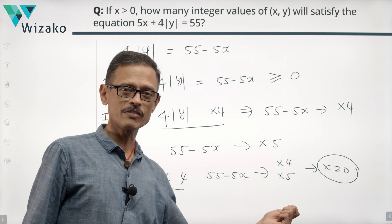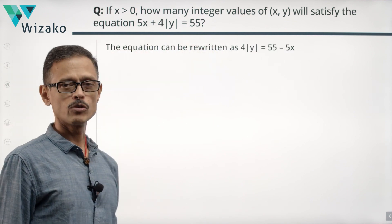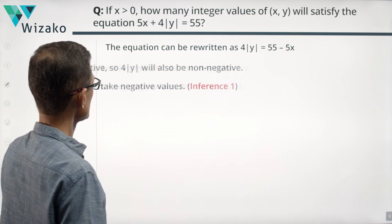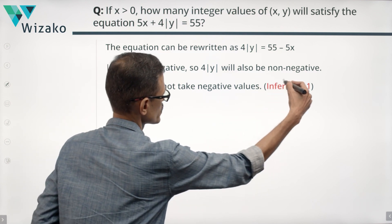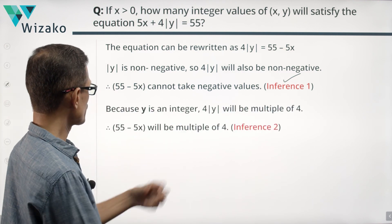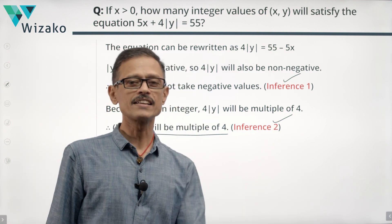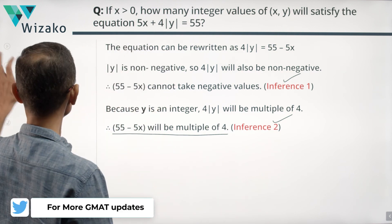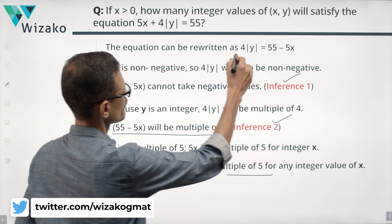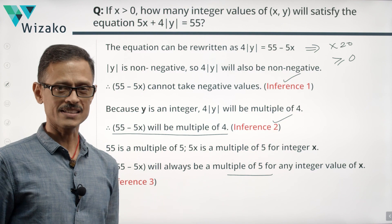Let me quickly summarize in consolidated form. We rewrote the equation as 4 modulus of y equals 55 minus 5x. Inference 1: modulus of y is non-negative, meaning 55 minus 5x cannot take negative values. Inference 2: y is an integer, modulus of y is an integer, 4 times modulus of y is a multiple of 4, so 55 minus 5x is a multiple of 4. Inference 3: 55 is a multiple of 5, x is an integer, 5x is a multiple of 5, so 55 minus 5x is a multiple of 5. Combining: 55 minus 5x is a multiple of 20 and is greater than or equal to 0.